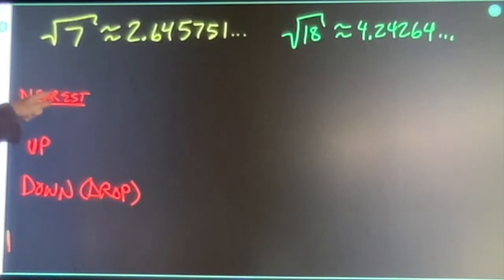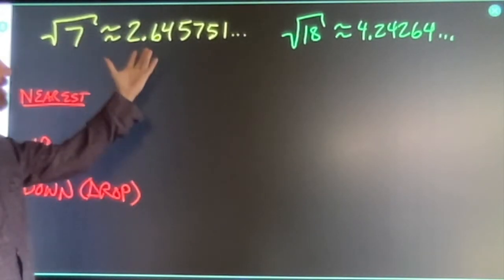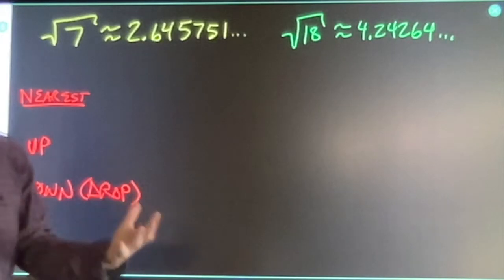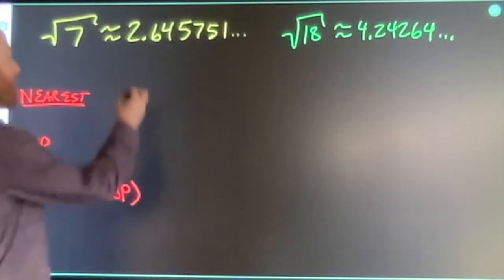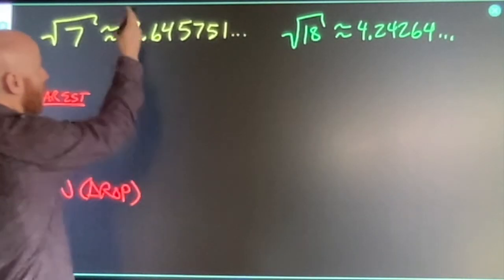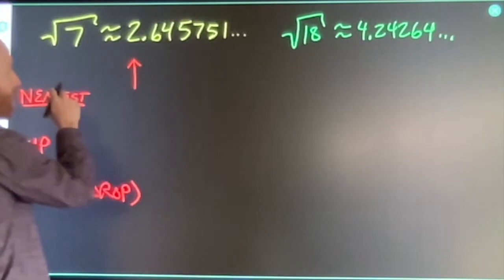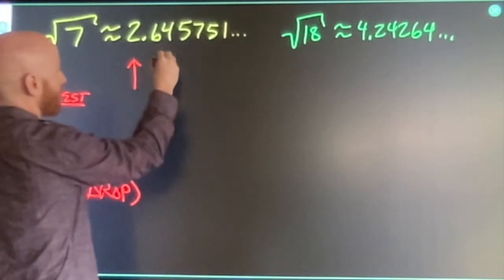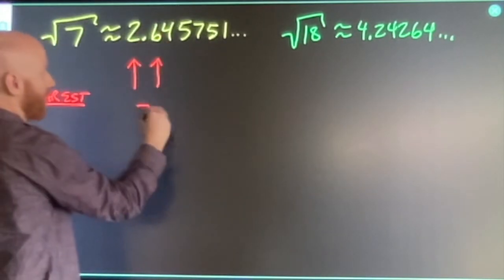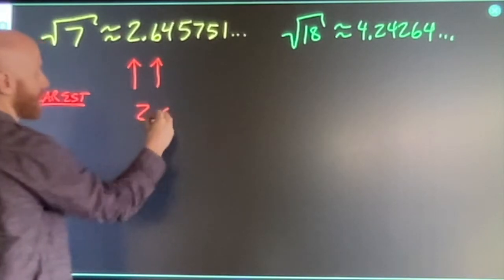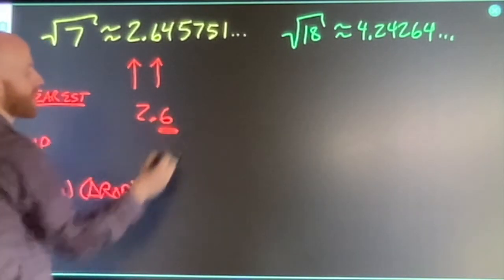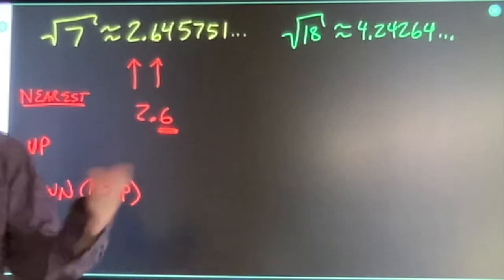I'm going to start with this because this is really just a combination of the other two. If, for example, I say I want to round square root of seven to the nearest whole number. Whole number is here. If I'm going to the nearest, I need to look at my next spot. So 2.6.